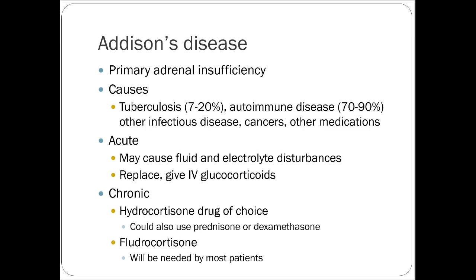Addison's disease is the opposite: primary adrenal insufficiency, associated with tuberculosis and autoimmune diseases. Acutely you may see fluid and electrolyte disturbances due to lack of mineralocorticoid effects — you can correct those relatively easily. IV glucocorticoids, usually hydrocortisone, help here since it best supplements the endogenous hormone. If you ever see someone on chronic fludrocortisone — this is one of the clinical applications: it helps Addison's patients retain fluid and keep electrolytes in balance. It's not super common.